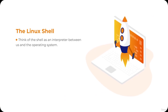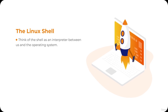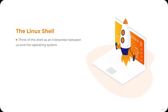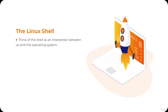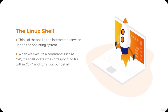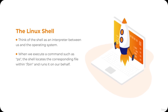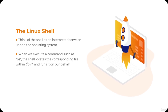Let's continue our journey into the Linux operating system by going one level deeper. The command line interface is simply a tool for accepting input and displaying output. The brains behind this operation are handled by something called the shell. Think of the shell as an interpreter between us and the operating system — it takes our commands and translates them into actions. For example, when we execute a command such as 'ps', the shell locates the corresponding file within the /bin directory and runs it on our behalf.